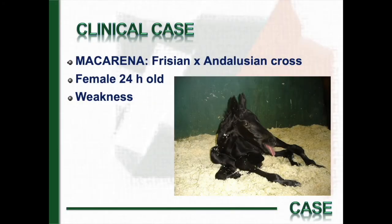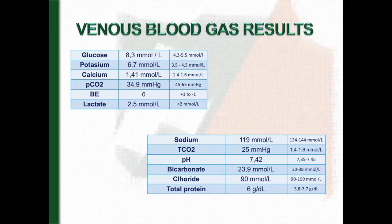Okay, the first clinical case that we are going to present corresponds to a 24 hours old female Frisian crossbreed named Macarena. Foal was referred to the hospital with history of progressive weakness and flexor tendon retraction. And here are the blood gases of this case.